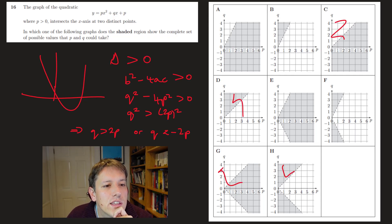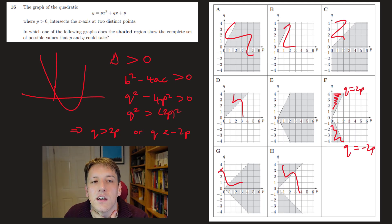And so bigger than 2p and less than minus 2p. So again, not these, it's between these two where I've got the line 2p and minus 2p. And I want the bits where q is bigger than the line q equals 2p or below the line q equals minus 2p. And so we can see that's this option here, which is f.